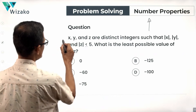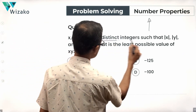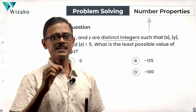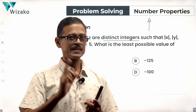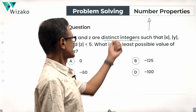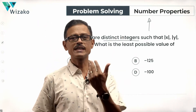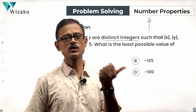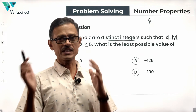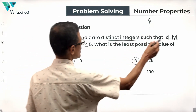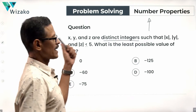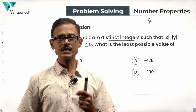Let's get started with the question. x, y, and z are distinct integers — make a note of all these details. Distinct means x is not equal to y is not equal to z; they are three different numbers. They are integers, so you don't need to worry about values like 2.3 or -8.4. They are full numbers, such that the modulus of x, modulus of y, and modulus of z are less than or equal to 5.